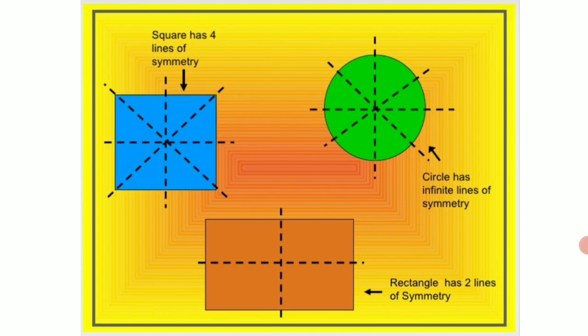Now let us come to the geometrical figures of a square, a circle and a rectangle and see how many symmetries these geometrical figures have. A square has four lines of symmetry children, as you can see, a vertical symmetry, a horizontal symmetry and two diagonal symmetries. A circle has infinite number of symmetries.